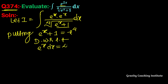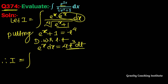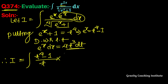Differentiating gives 4 into t cubed. Therefore I equals integration, and in place of e to the power x dx we get 4t cubed dt. For e to the power x, from here it becomes t to the power 4 minus 1, and putting t to the power 4 we get t, and in place of e to the power x dx we substitute 4t cubed dt.